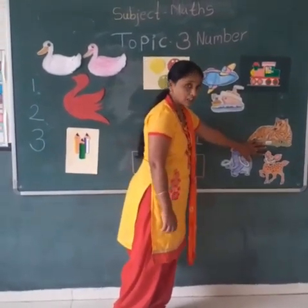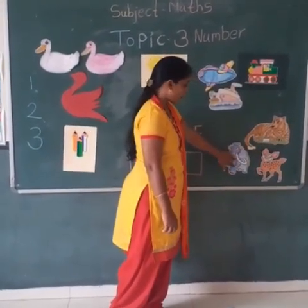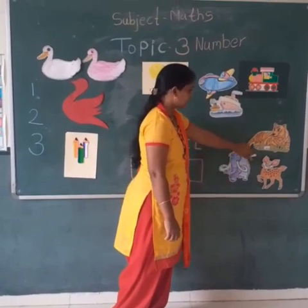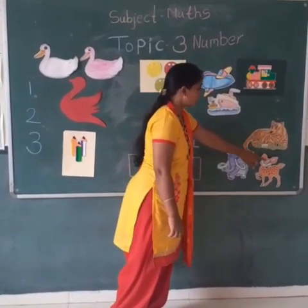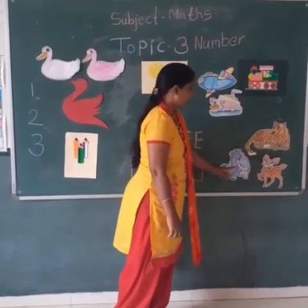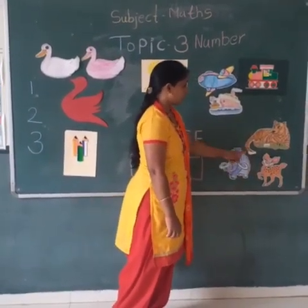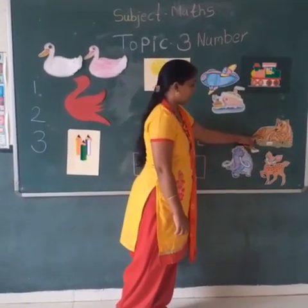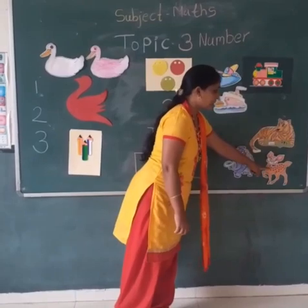Then next, how many animals? 1, 2, 3. Alpha, tiger, deer.